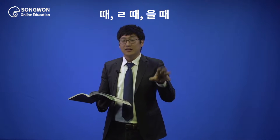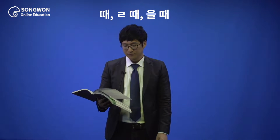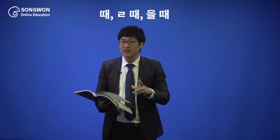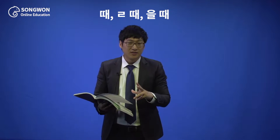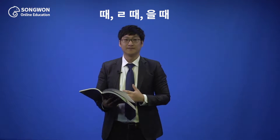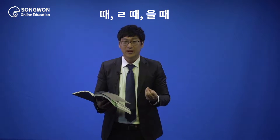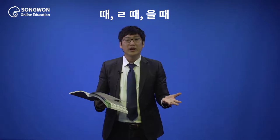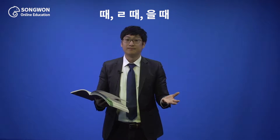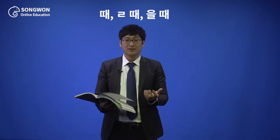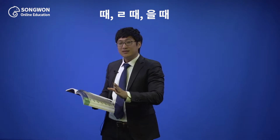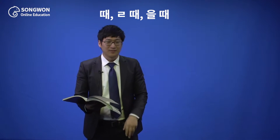Alright, please memorize: 때, 엘 때, 을 때. First of all, this also starts with L. That means we have irregulars, right? Which ones are irregulars? Some words that end with L — that has bottom letter L. So what do we do when we conjugate them? We have to get rid of L — we have to get rid of the 을 part. So when the grammar starts with L, we have been getting rid of 을 or 으 stuff. Okay, that's that.